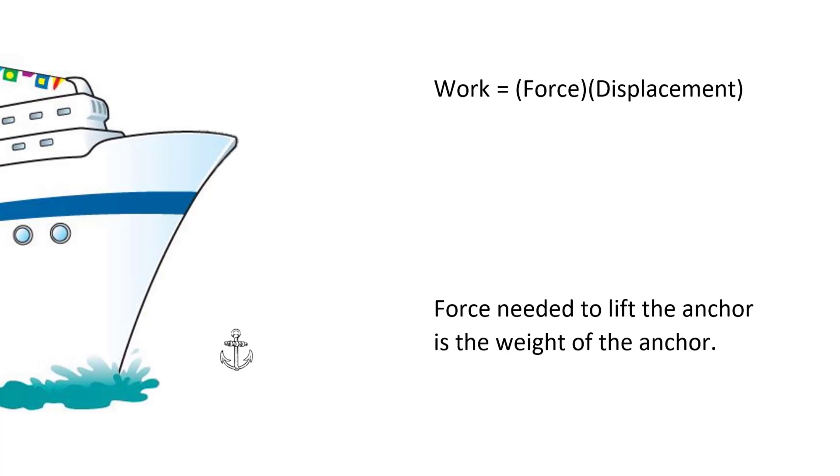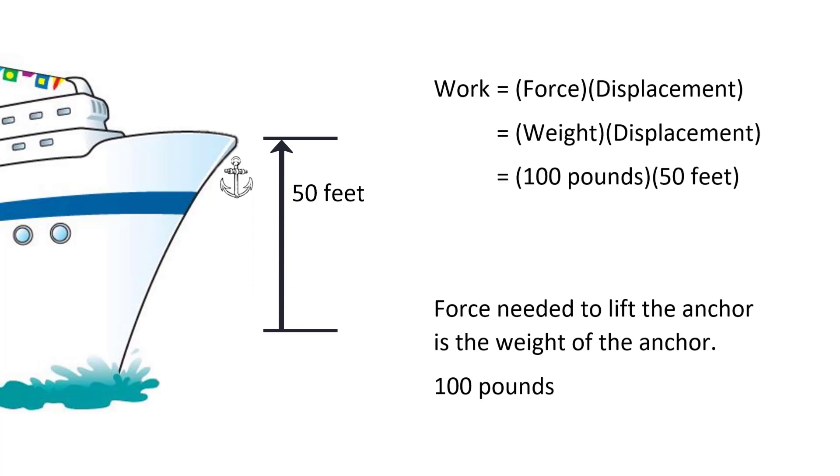We start with a simple object which makes the work easy to find, the anchor at the end of the chain. Remember from physics that work equals force times displacement. The force necessary to lift something is equal to its weight. If the anchor weighs 100 pounds and is being lifted 50 feet, then the work done is force times displacement, which is weight times displacement, so 100 pounds times 50 feet, or 5,000 foot-pounds.